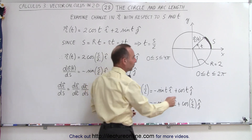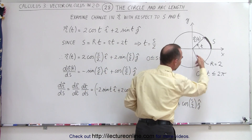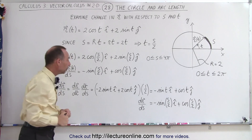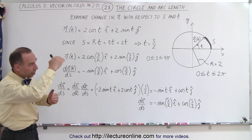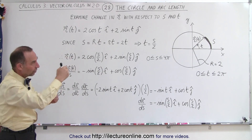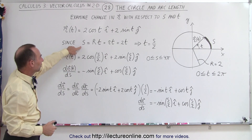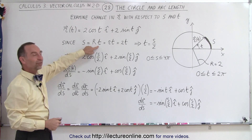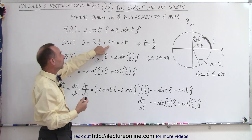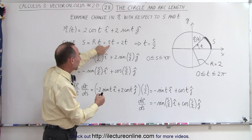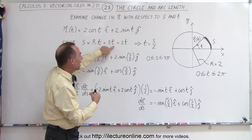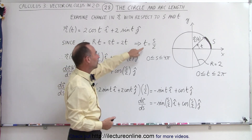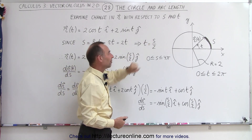The parametric variable goes from 0 to 2π, giving us one complete circle. We relate the arc length along the edge of the circle: s equals the radius of the circle times t, which is also the magnitude of the position vector times t, equal to 2. So s equals 2t, or t equals s divided by 2.